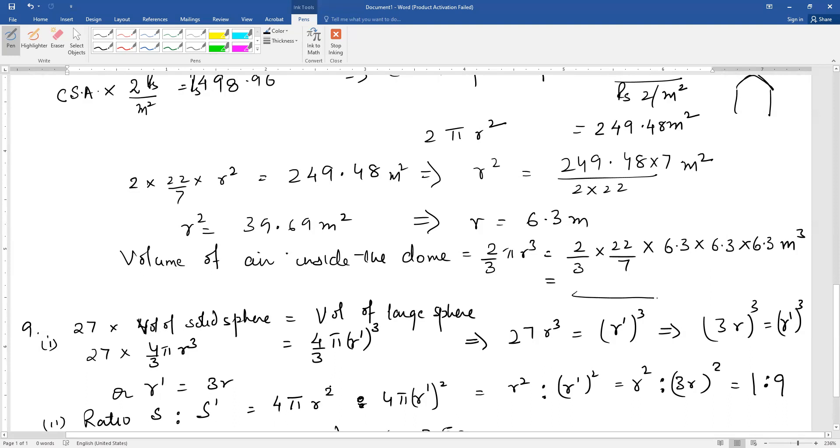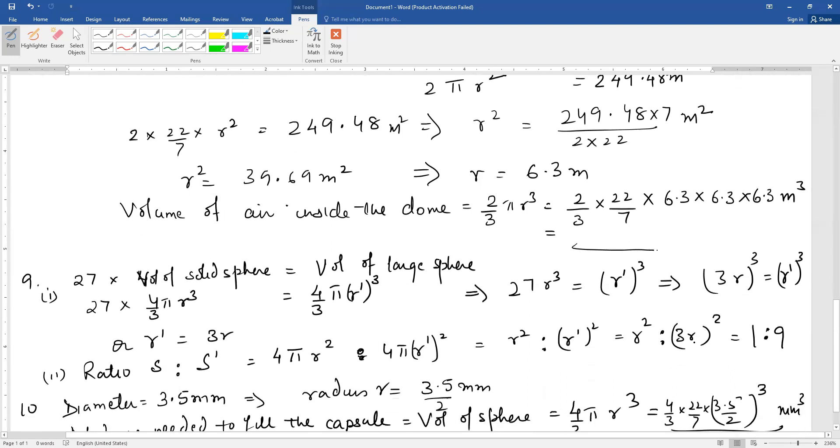We have the ratio 4π r² is to 4π r'². The new sphere with surface area s' had radius r'. This gives us r² is to r'². 4π cancels. Substitute r' as 3r, the relationship we found in the first part. This will give you r² cancels, 1 is to 3², that means 1 is to 9. This is the answer.